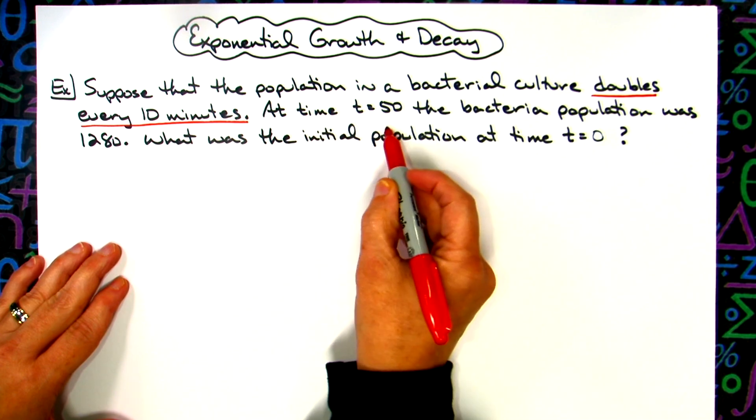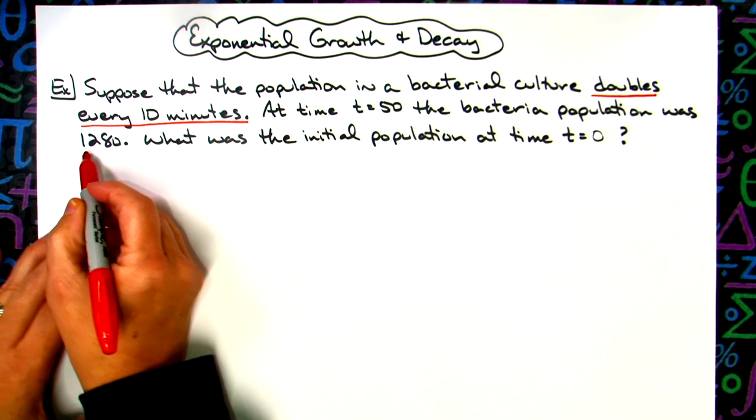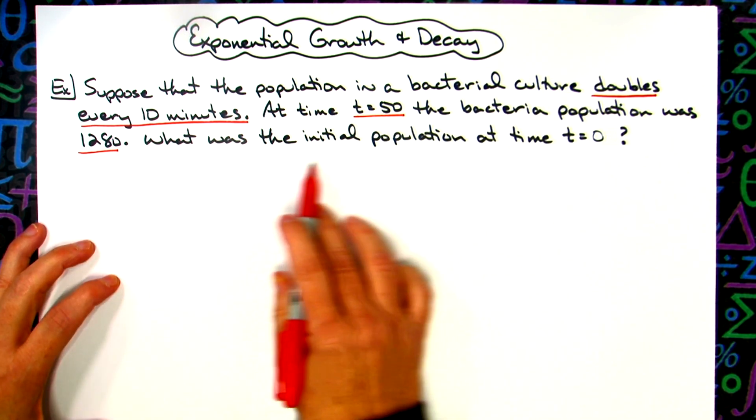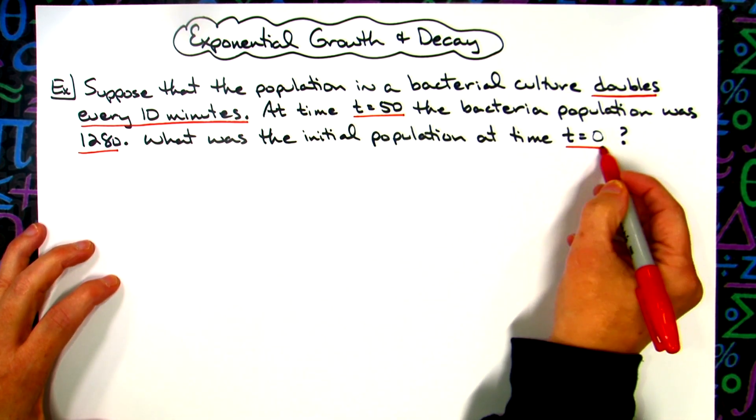At time t equals 50, the bacteria population was 1280. What is the initial population at time t equals zero?